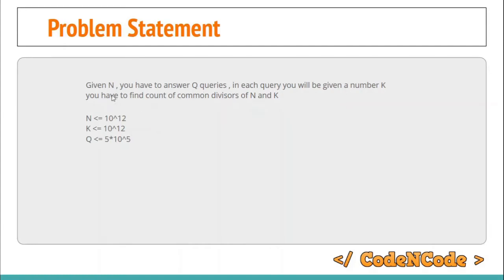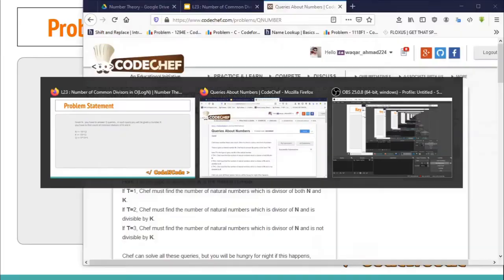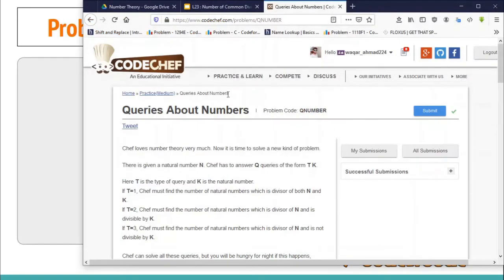Here N doesn't change, so this is a relief. If there are Q queries and in those queries both N and K change, then the algorithm would change and I don't think there exists any log N time algorithm. The motivation behind this lecture is this problem.